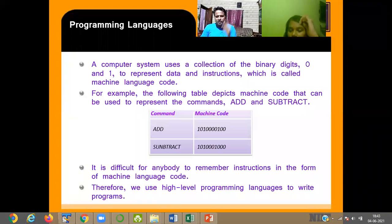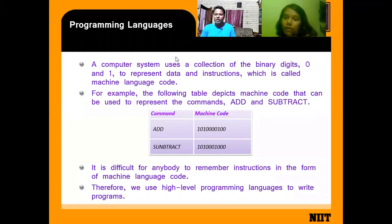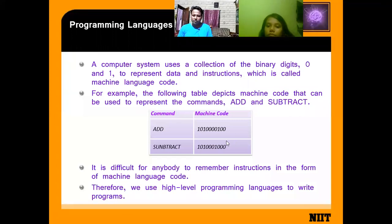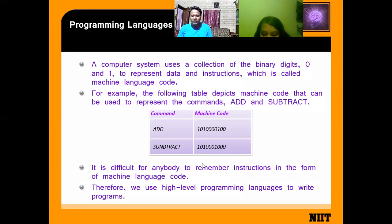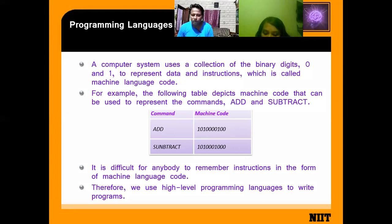When you press a simple plus, it gets converted to that binary number. If you asked a human being to remember that binary number instead of just the plus symbol, it is not possible. Just as we store contact numbers under a name because we can't remember so many numbers, it's impossible for a human brain to remember machine code.